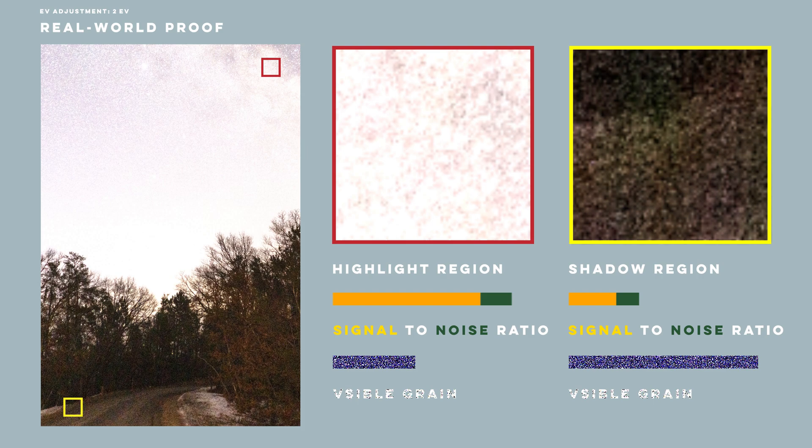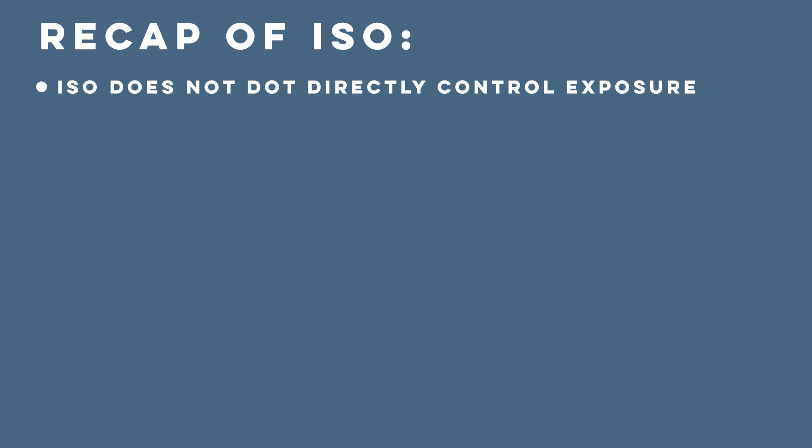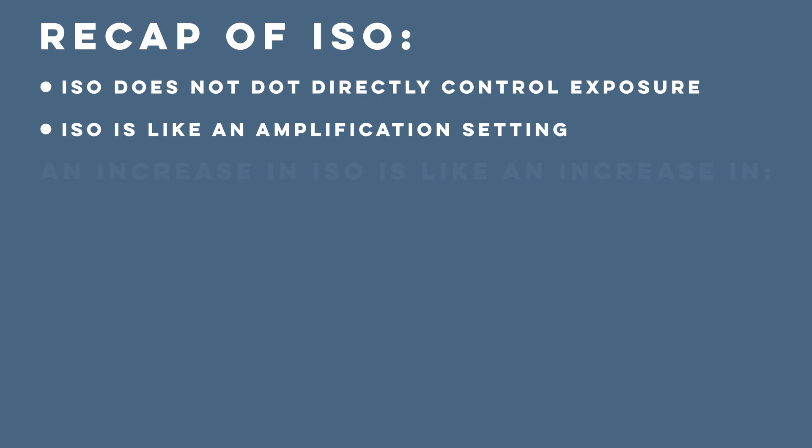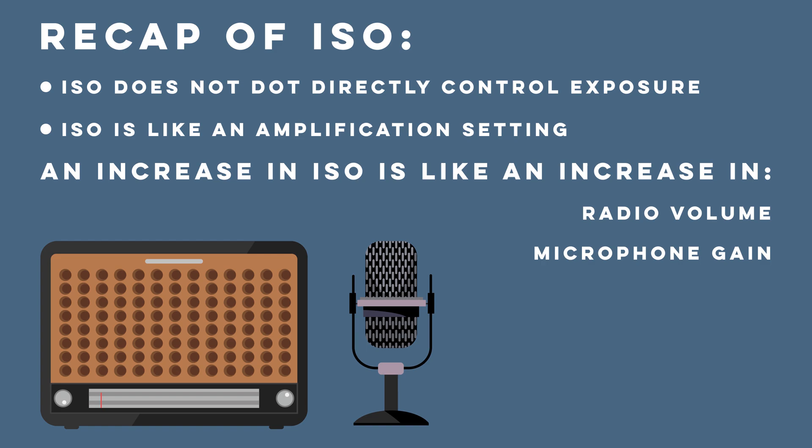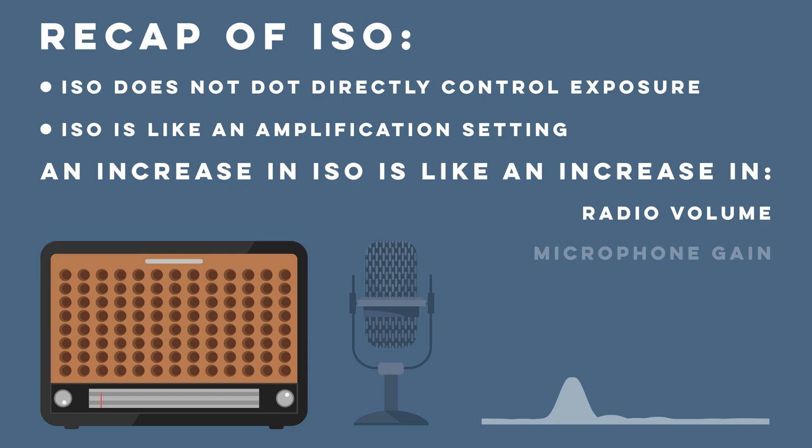ISO does not directly control exposure. ISO is, simply put, an amplification setting applied to light — effectively the same as turning up the volume on your radio or adjusting the gain on a microphone. It doesn't actually change what signal is being received, it just amplifies it. A radio station with poor signal can't be turned up too far, because it just turns to static.